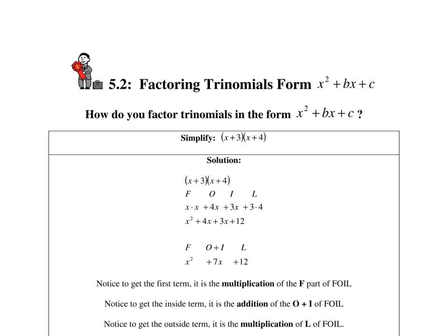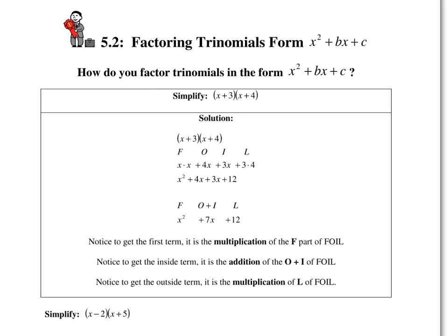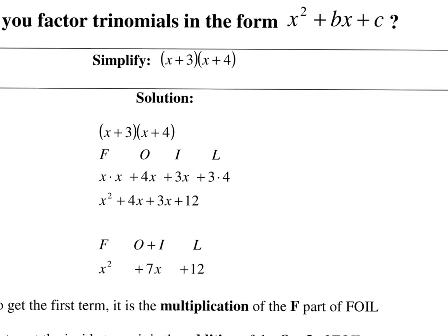We're going to continue on with factoring here in section 5.2 of Al Groesch's book, Developmental Math 2. We're going to start factoring some trinomials in the form of x squared plus bx plus c. But before we factor trinomials, we're going to first review some multiplication, because factoring is just undoing multiplication. When we multiply two binomials, we sometimes use this acronym FOIL. In my videos I called it double distribute.